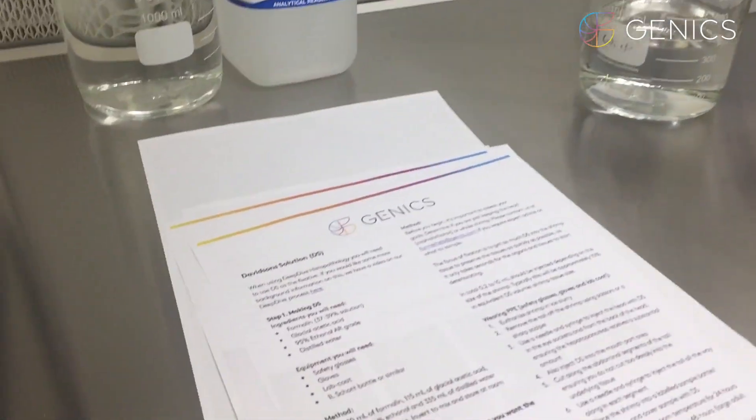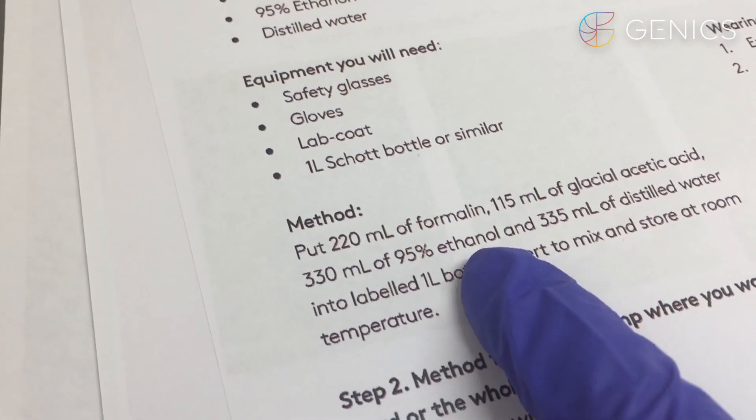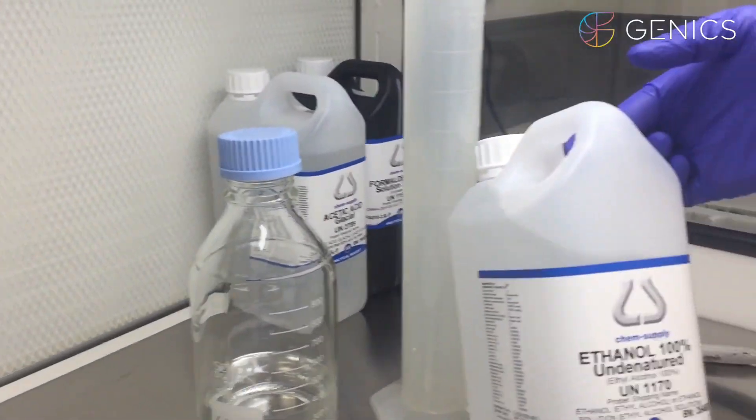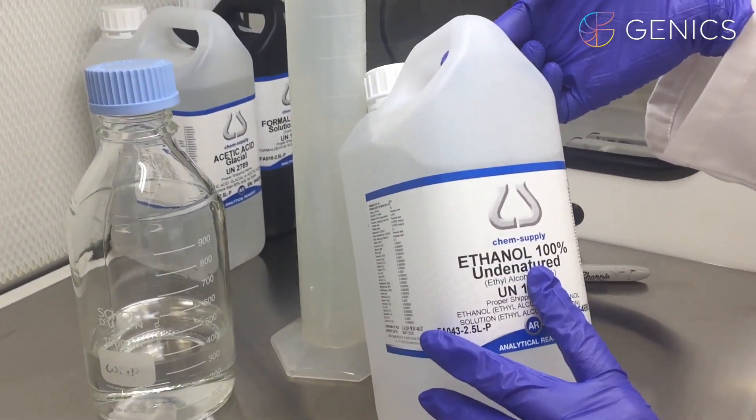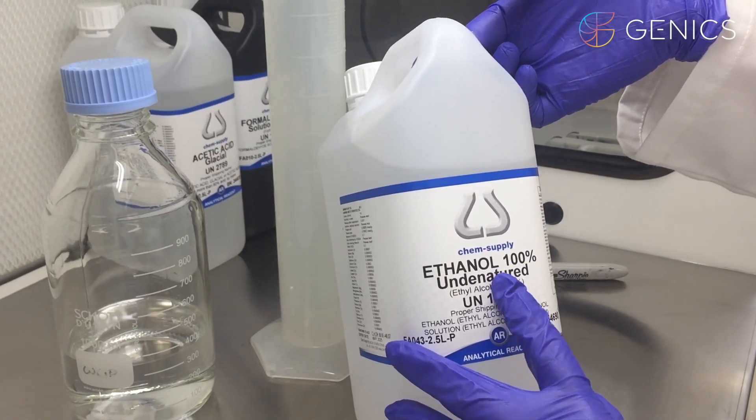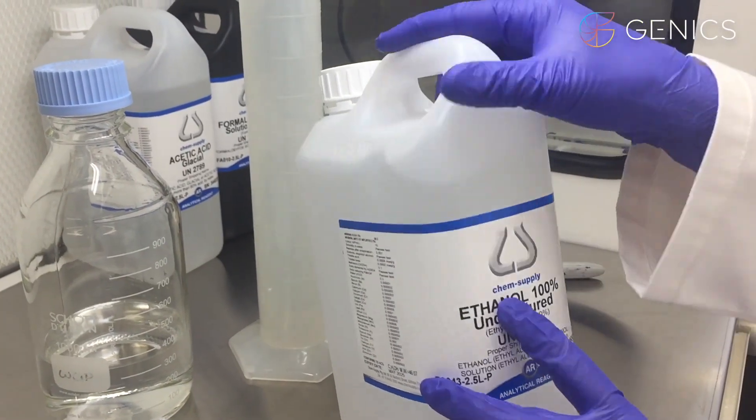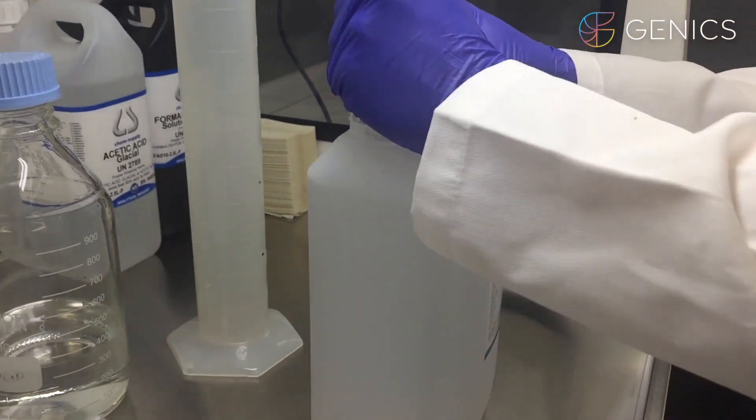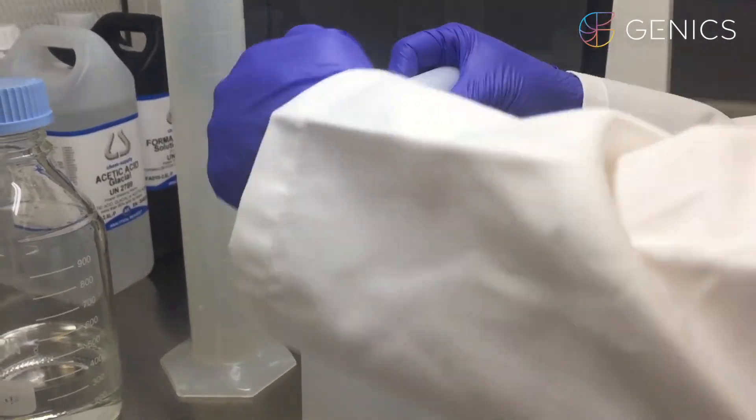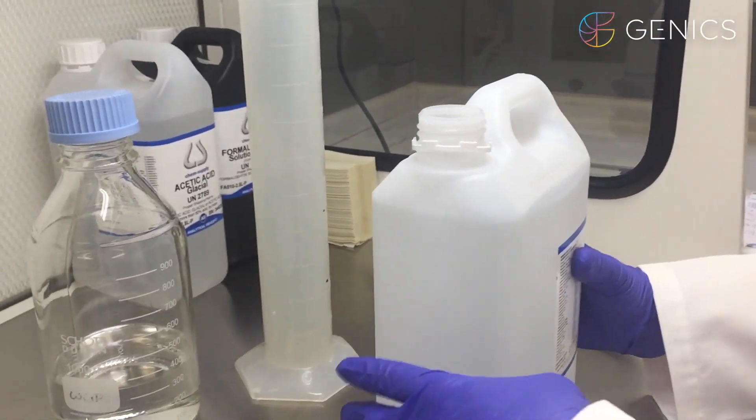Third, we put in 330ml of ethanol. It says 95% ethanol, here we have 100% ethanol, undenatured. As soon as we remove the lid from this ethanol, the moisture will drop the percentage down to about 95%, 97%, so it's okay to use the 100% ethanol, 330ml. We'll mark here again.